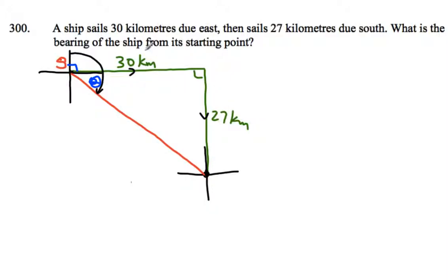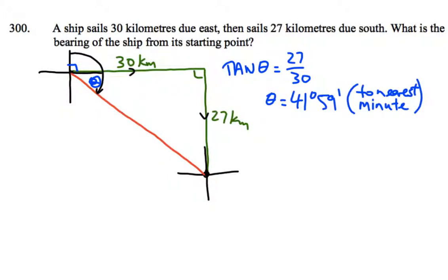We have an opposite and an adjacent. So have a think about your Sokotoa and figure out whether you're going to be using a Sin-Cosin-Tan sort of situation. I'm here to tell you it's tan, opposite and adjacent. So 27 over 30 is there. Now you're finding an angle, so it's going to be pressing Shift-Tan 27 over 30 to find the angle. So that angle is 41 degrees 59 minutes.